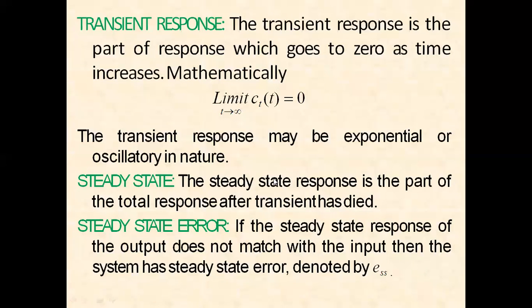Steady state response. The steady state response is the part of the total response after the transient has died out — meaning when the transient of the system goes to zero. The steady state response of the output does not match the input when the system has a steady state error. We have now learned about the transient response, steady state response, and steady state error.